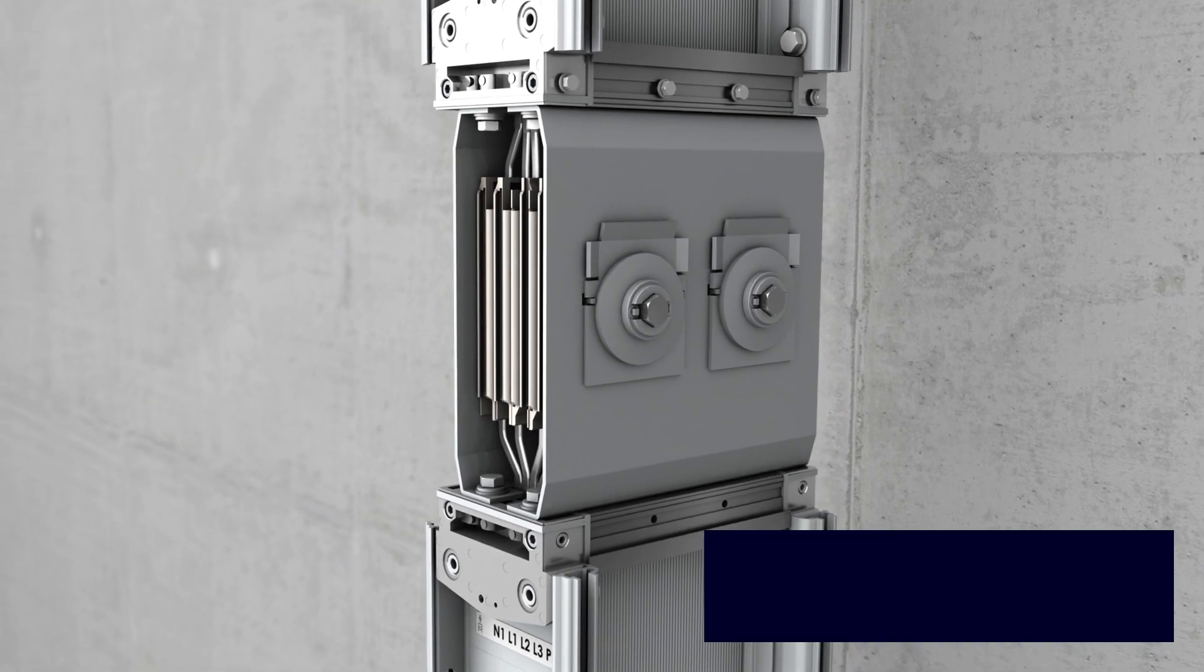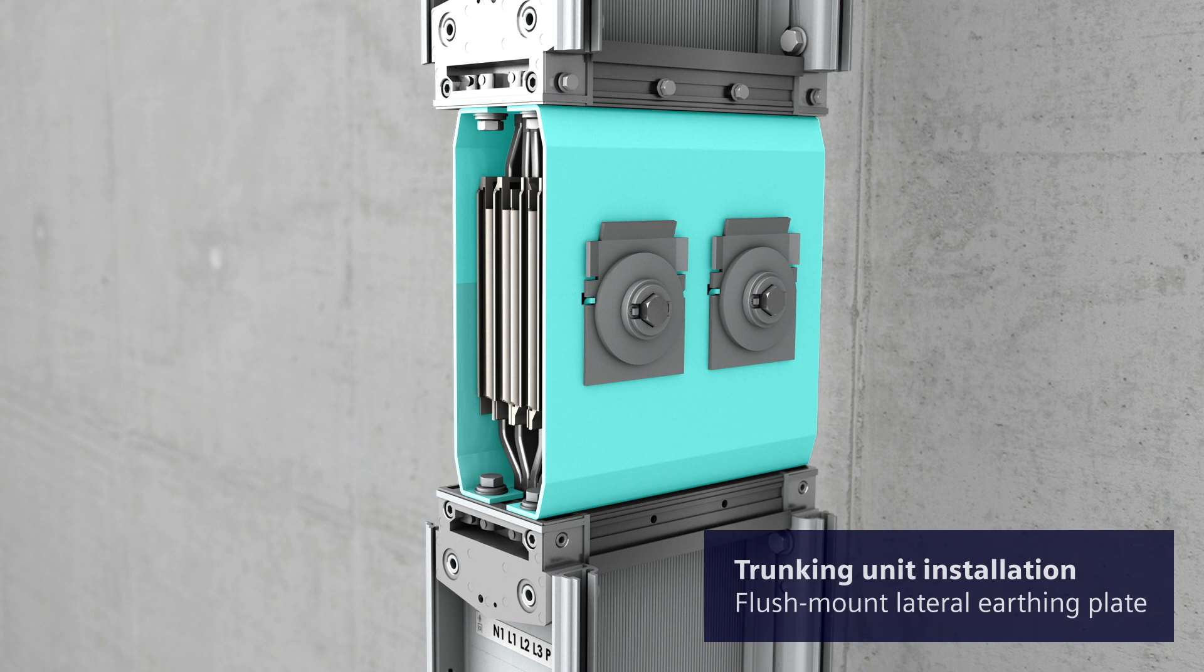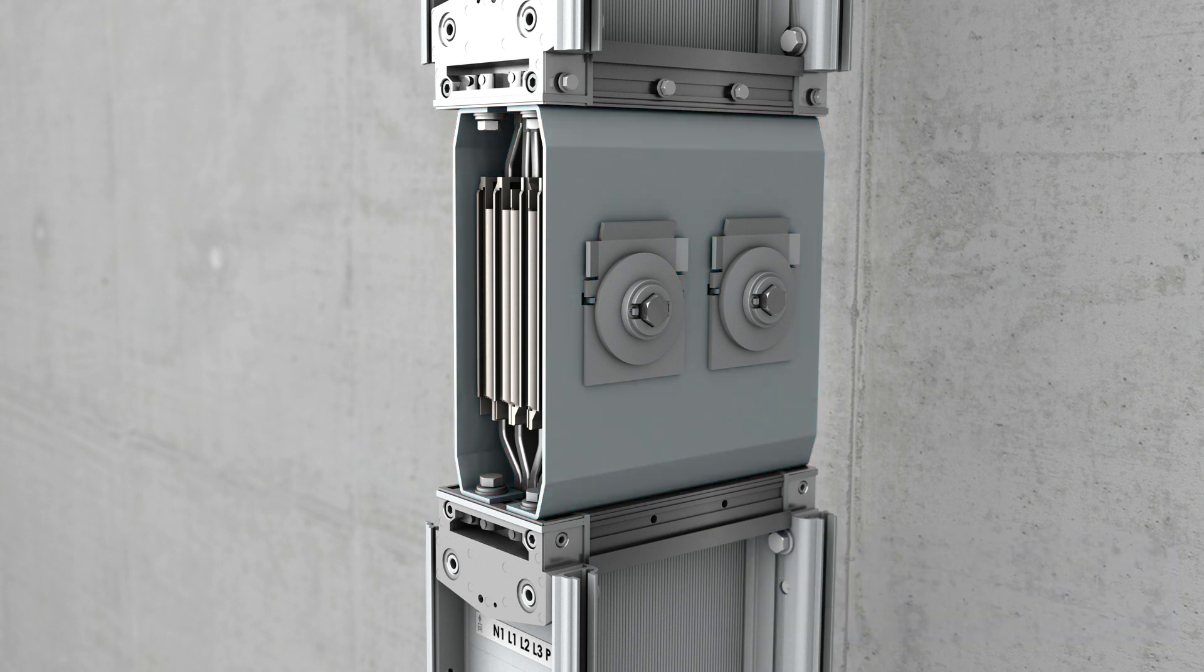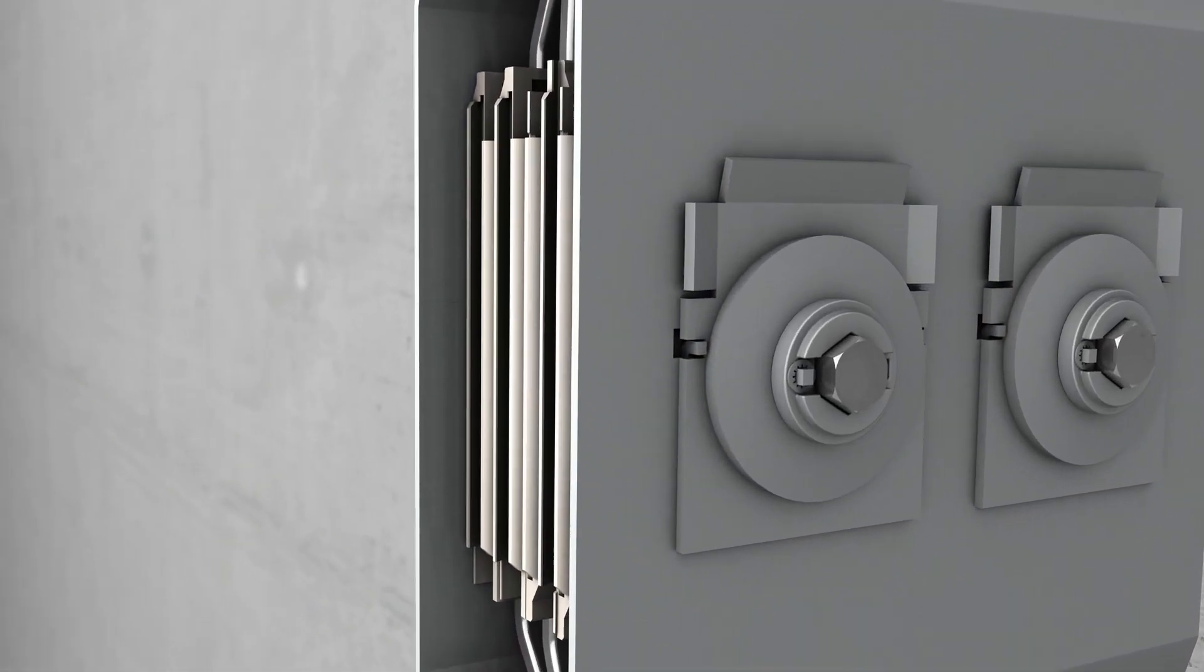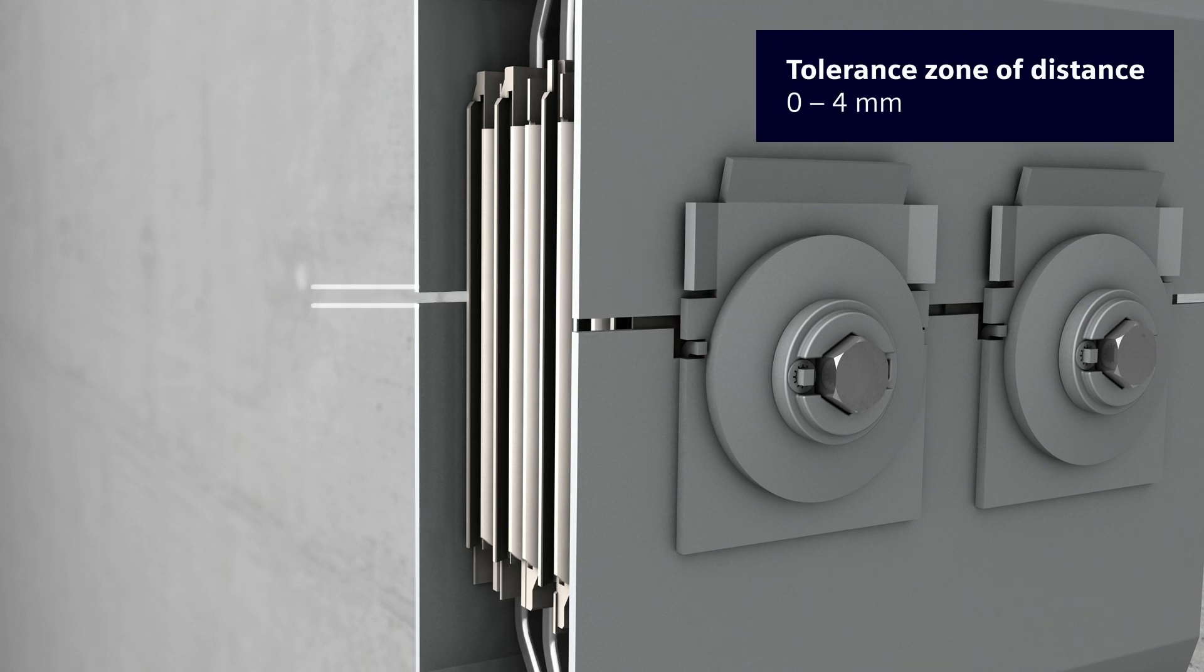Make sure to position the lateral earth side plates flush against the two trunking units. Check the distance between the two trunking units. The distance between the trunking units at the earth side guide plates must be within a tolerance of 0 to maximum 4 mm. The terminal block is then positioned correctly.